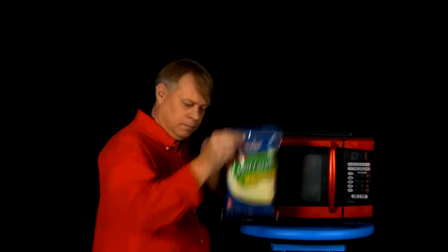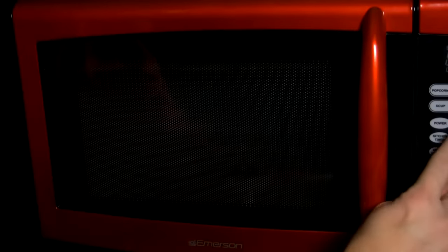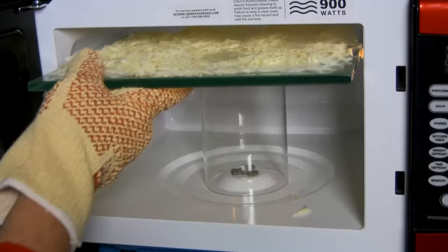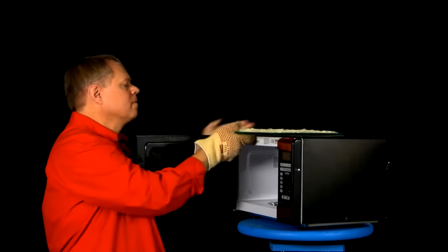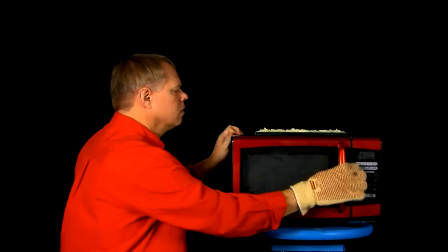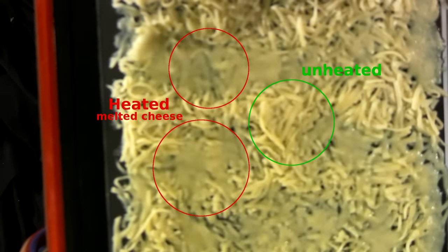You can get an idea of the wavelength of the energy emitted from the magnetron using cheese. You can see on here sections where the cheese is completely melted, and other sections where it's completely unheated.